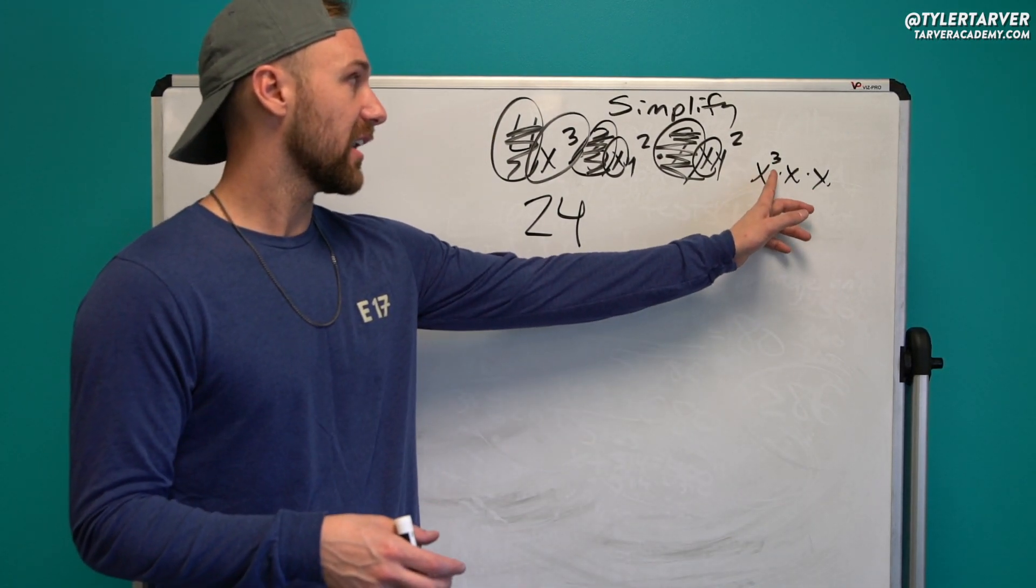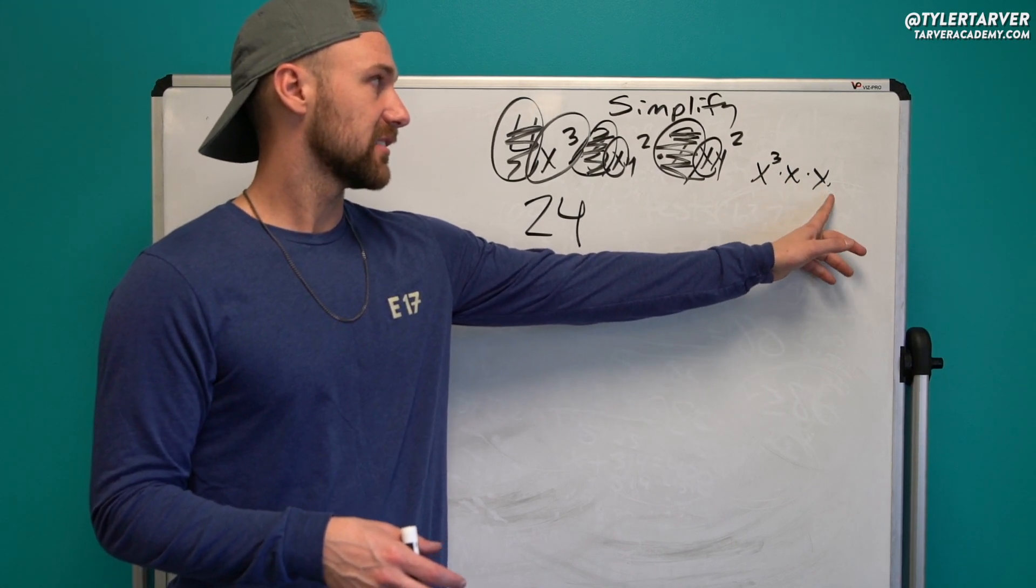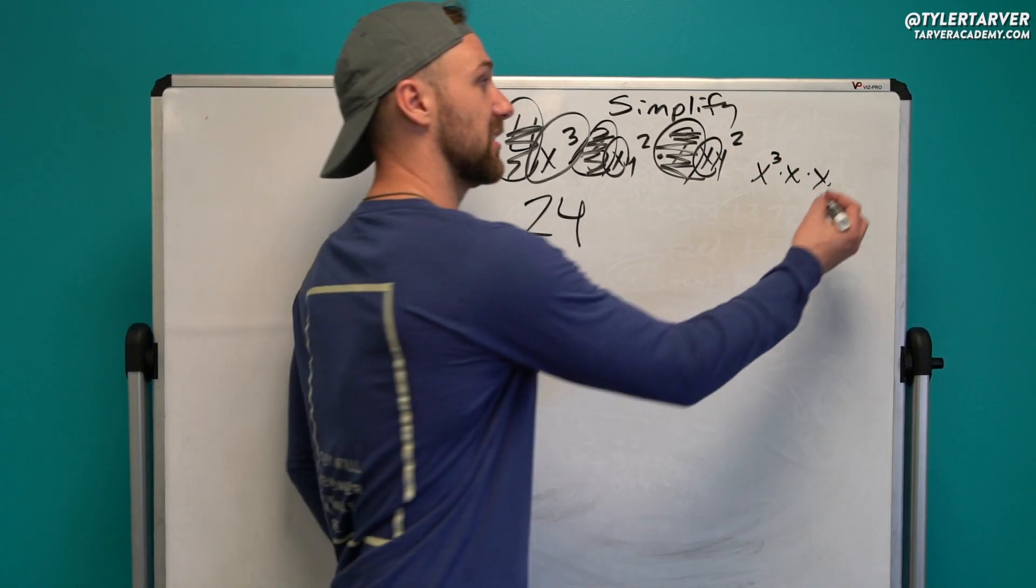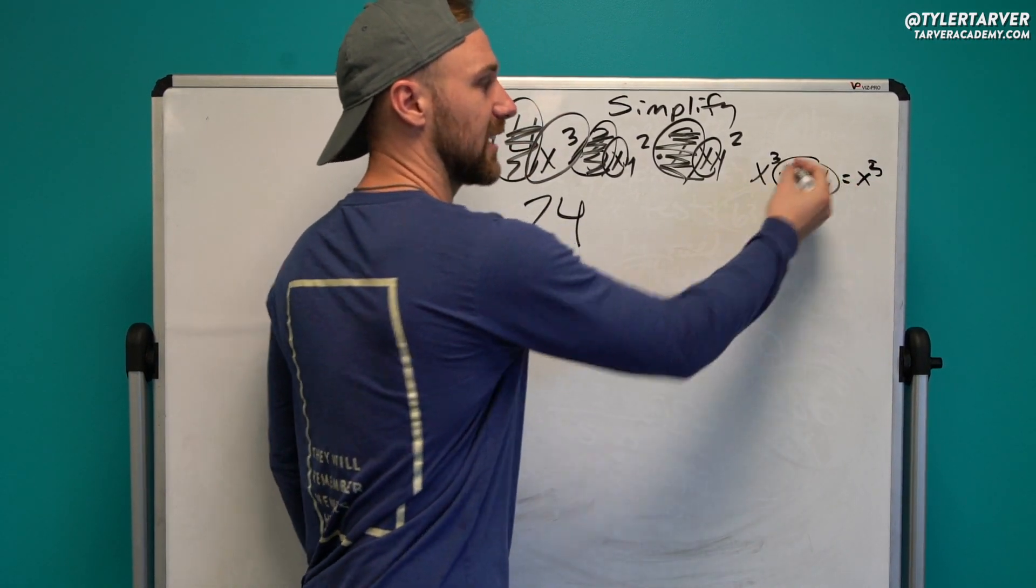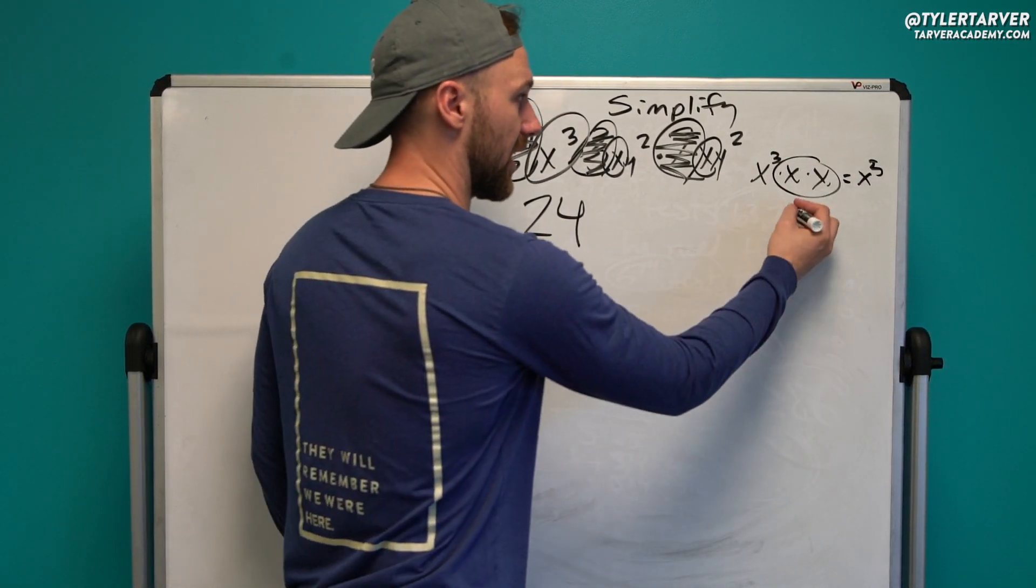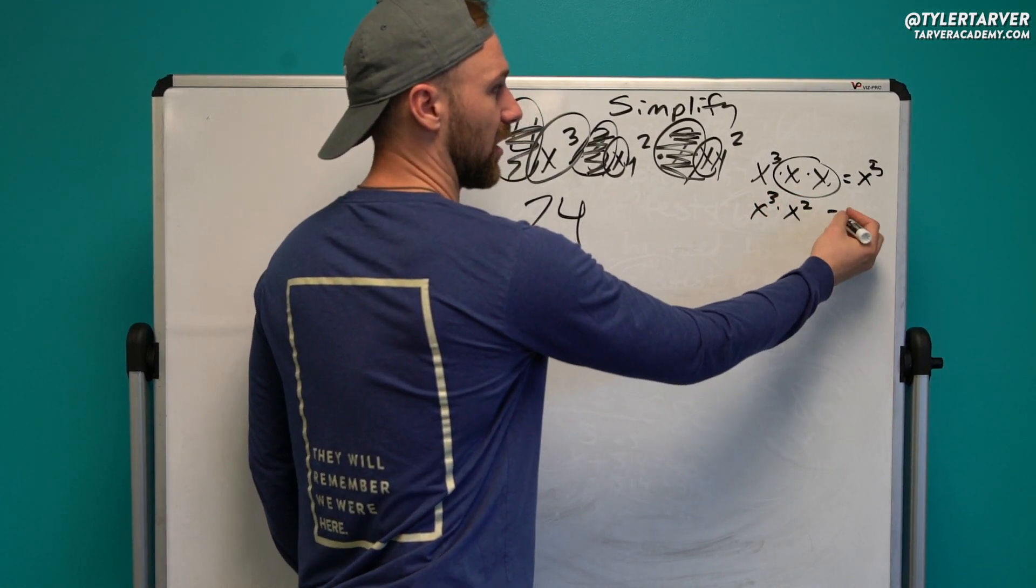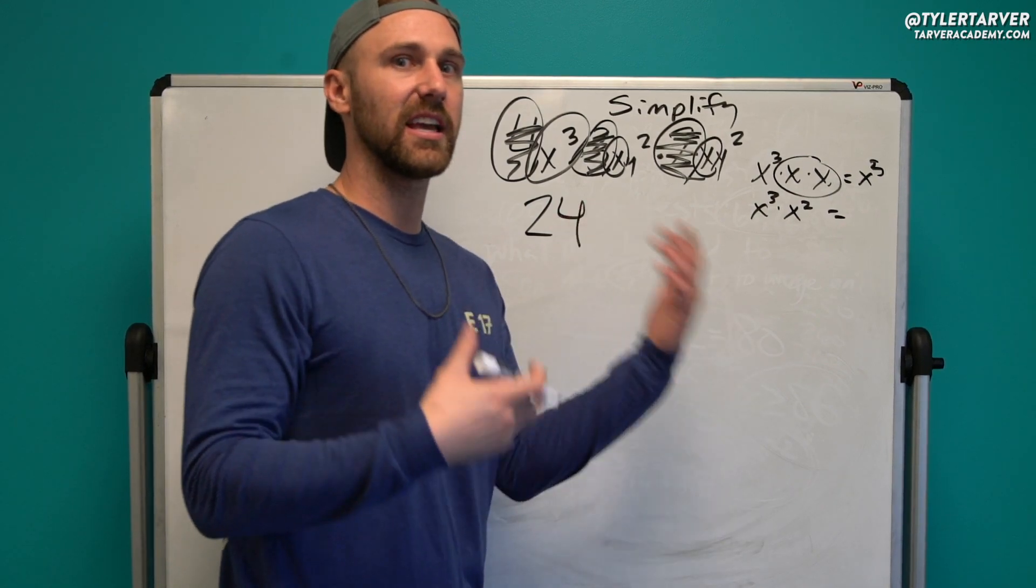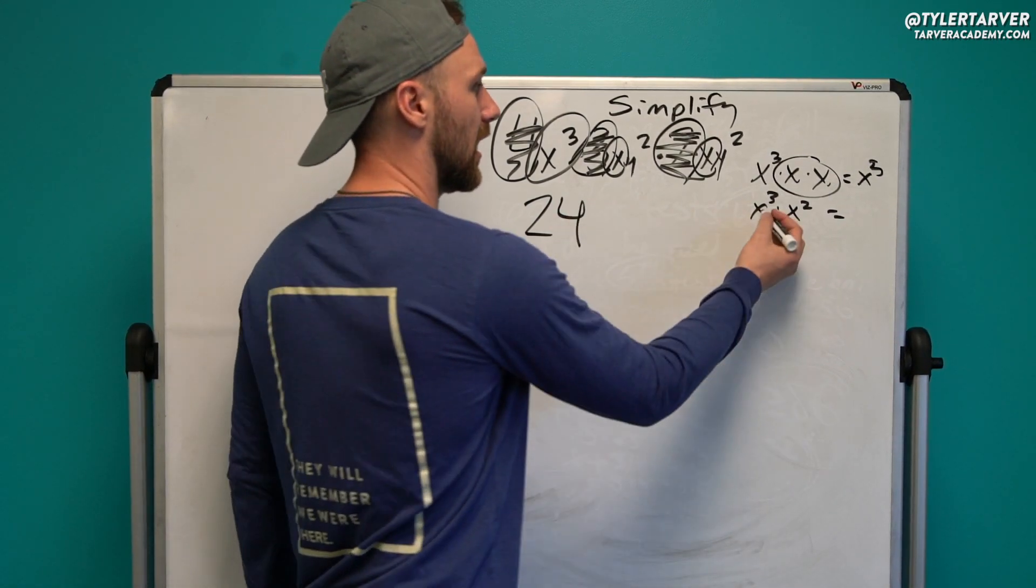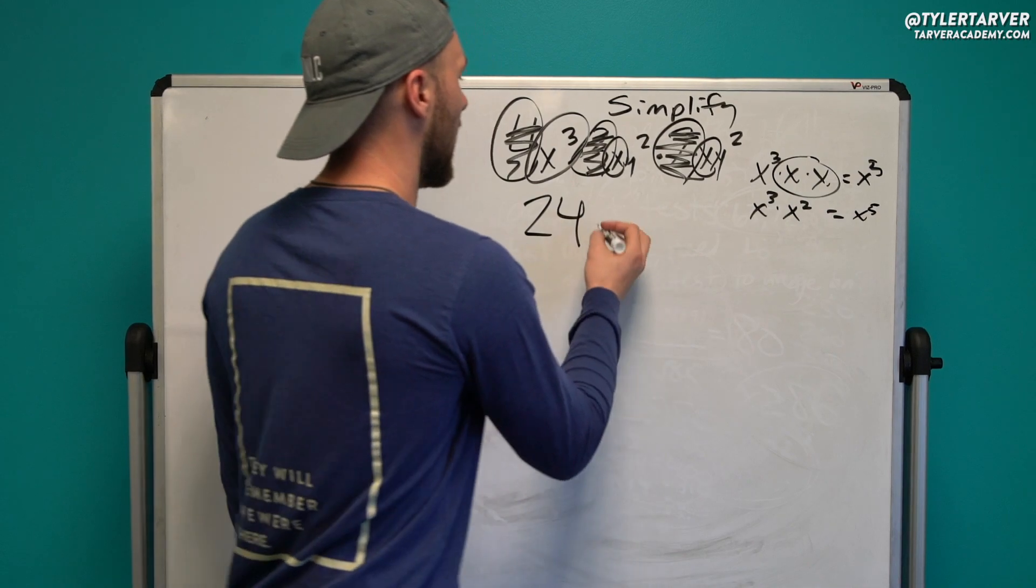So I've got x times x times x, which is x to the fifth. If you're kind of confused by that, think of what is x times x? It's x squared, right? A lot of people think that's a zero because it's not there, but it's a one. So that's still x to the fifth.